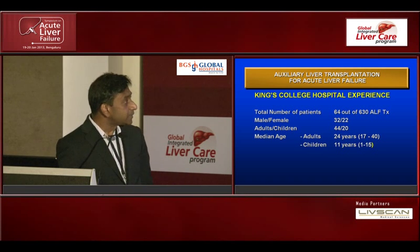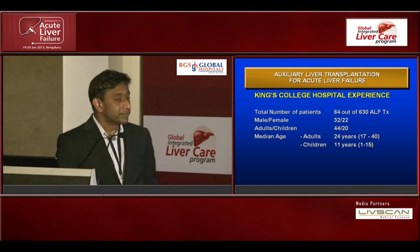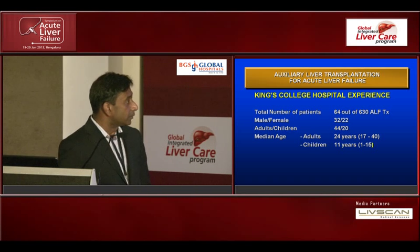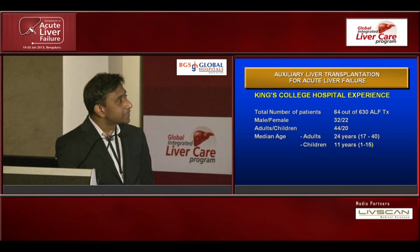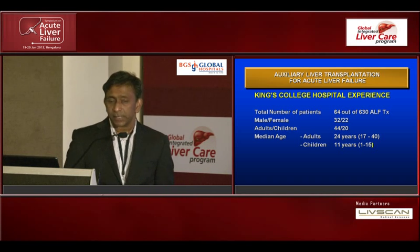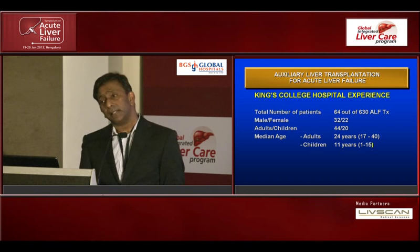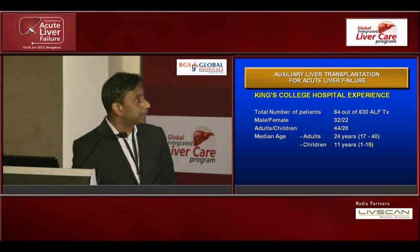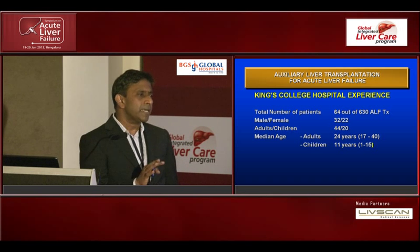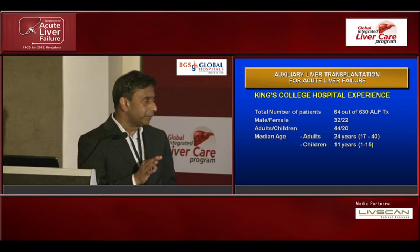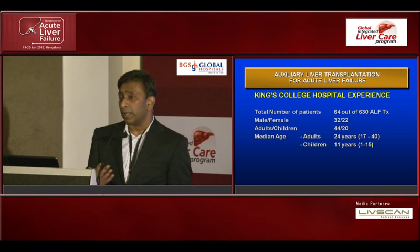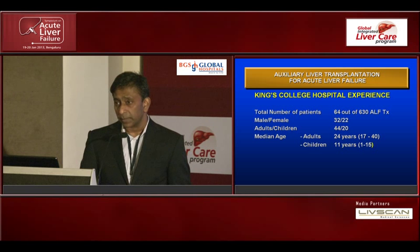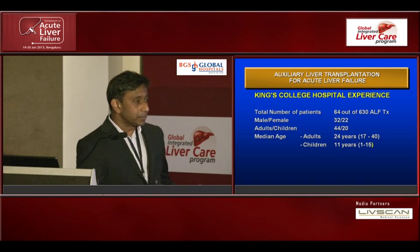So why is it that we have got better results? This is the largest series in the world — more than 50% of the world series. We have data on 64 patients out of 630 acute liver failure transplants at King's College Hospital. Only 10% were actually suitable. In the early days we did very few auxiliary liver transplants. Annually you're talking about doing three to five auxiliary liver transplants a year, even in a large population of patients.